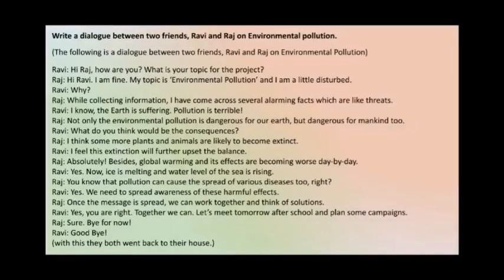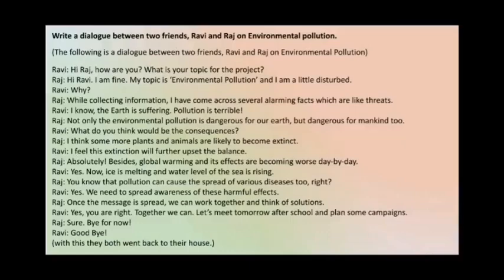Now, here is a sample of dialogue writing. Write a dialogue between two friends, Ravi and Raj, on environmental pollution. If names are given in the question, use those same names. If names are not given, you can use your own names. You begin by writing within brackets: 'The following is a dialogue between two friends, Ravi and Raj, on environmental pollution.' This is the way you need to start your dialogue — with a bracket introduction written in passive voice.